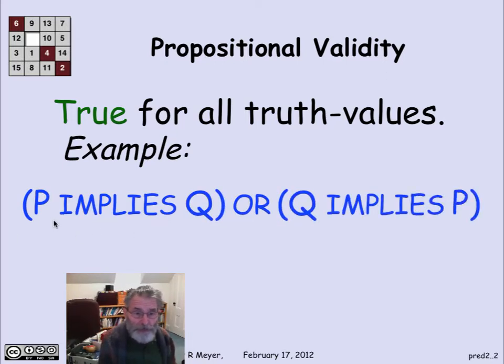Here's a familiar example: P implies Q or Q implies P. This formula comes out to be true no matter which of the four possible pairs of truth values P and Q might have. It's a typical example of a propositional validity, which we could easily verify by truth table.